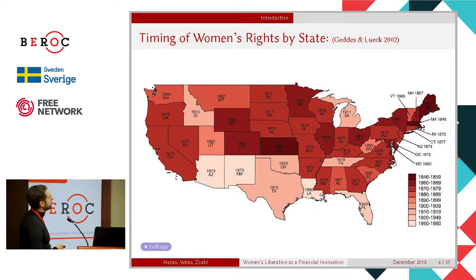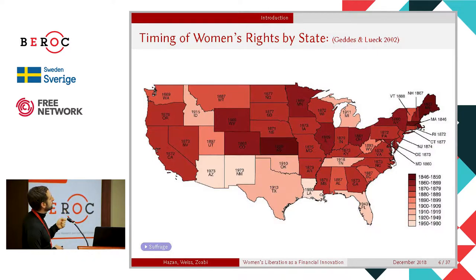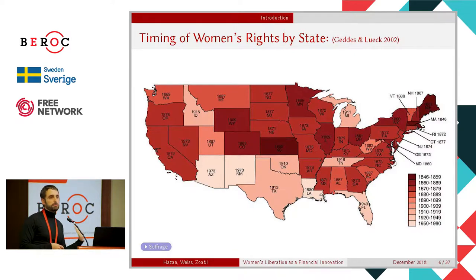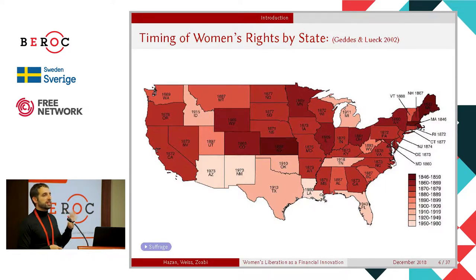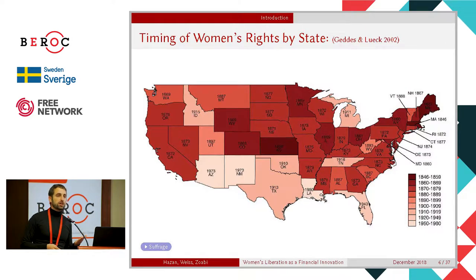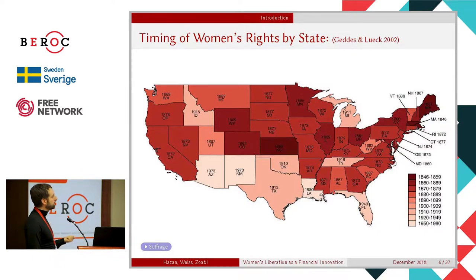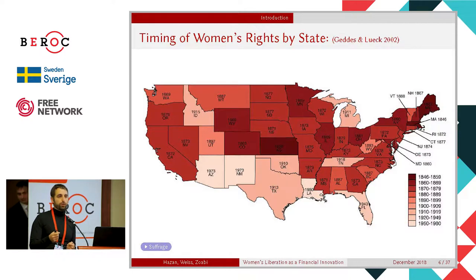This is a map of the United States, and every state has in it the date that women were granted property rights. The first state was Massachusetts in 1846, so we're going to round that up and begin our analysis in 1850. By 1920, all but four states had granted women property rights — everybody except Florida, Louisiana, New Mexico, and Arizona. We're going to end our analysis in 1920 not only because by then almost all states had granted women rights, but also because this is when the 19th Amendment was passed, giving women the right to vote.